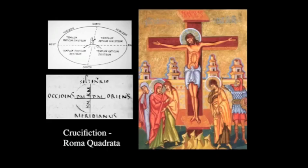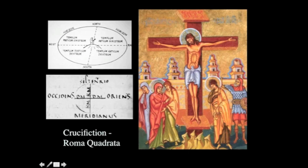We noticed also that the method of execution called crucifixion by the Romans was not simply the only thing they could think of to kill their criminals of state, but it was also a way of re-imprinting the symbol of Rome — using the very symbol of Rome as the tool for the execution.